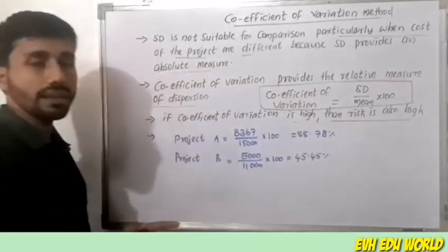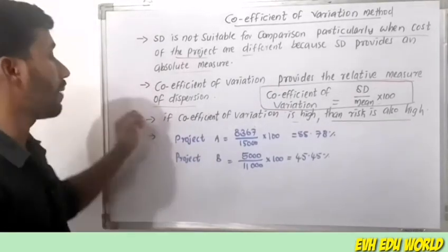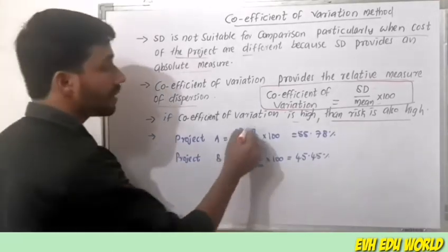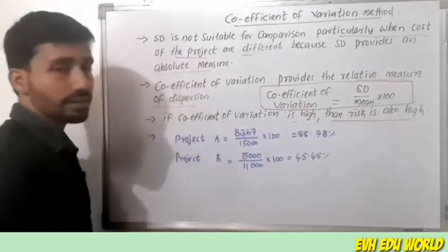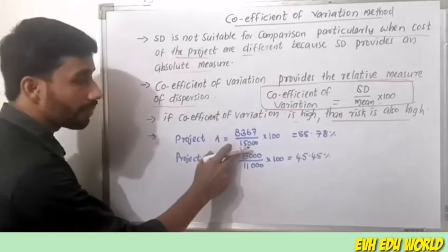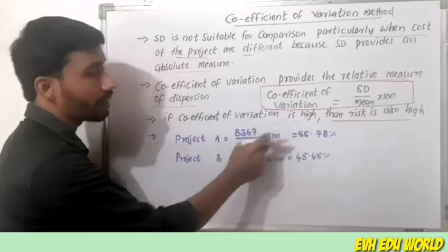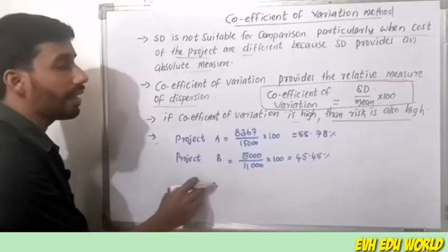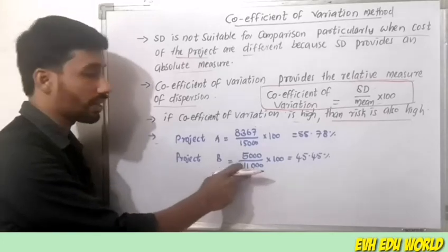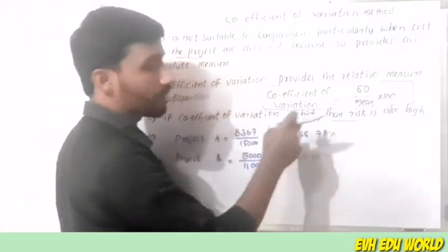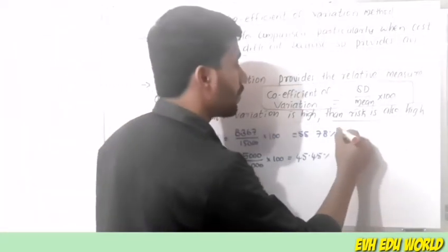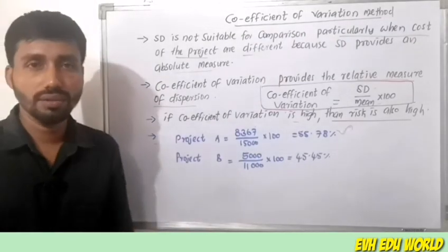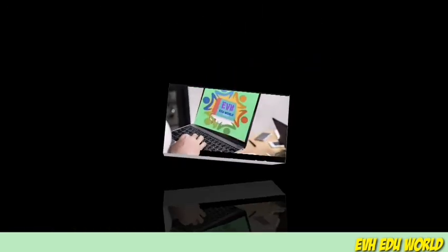The highest coefficient of variation indicates the highest risk. For Project A: CV = (8,367 ÷ 15,000) × 100 = 55.78%. For Project B: CV = (5,000 ÷ 11,000) × 100 = 45.45%. Since Project A's CV of 55.78% is higher, Project A is more risky according to the Coefficient of Variation method as well.